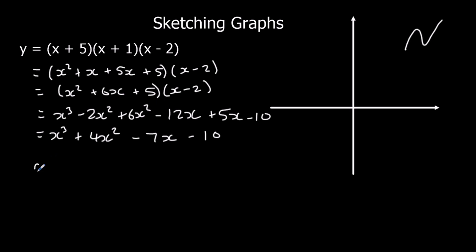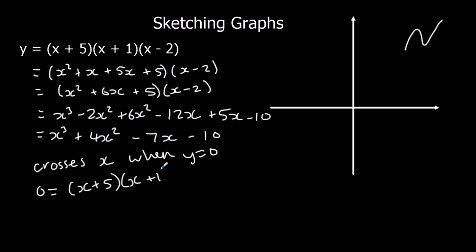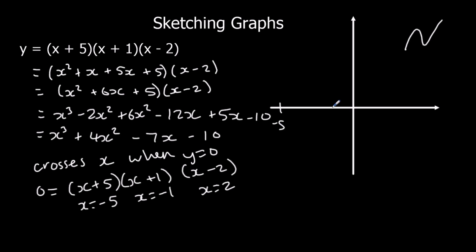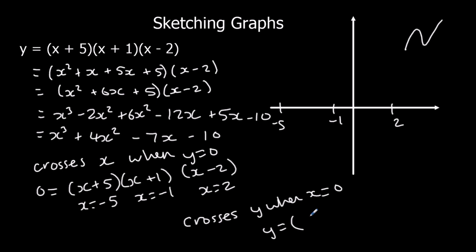Crosses x when y is 0. So if y is 0, we have x plus 5, x plus 1, x minus 2. So the answers are x equals minus 5, x equals minus 1, and x equals 2. So it crosses at minus 5, minus 1, and 2. Then it crosses y when x is 0: 0 plus 5 is 5, 0 plus 1 is 1, 0 minus 2 is minus 2. 5 times 1 is 5, times negative 2 is negative 10. So it crosses the y-axis at negative 10.